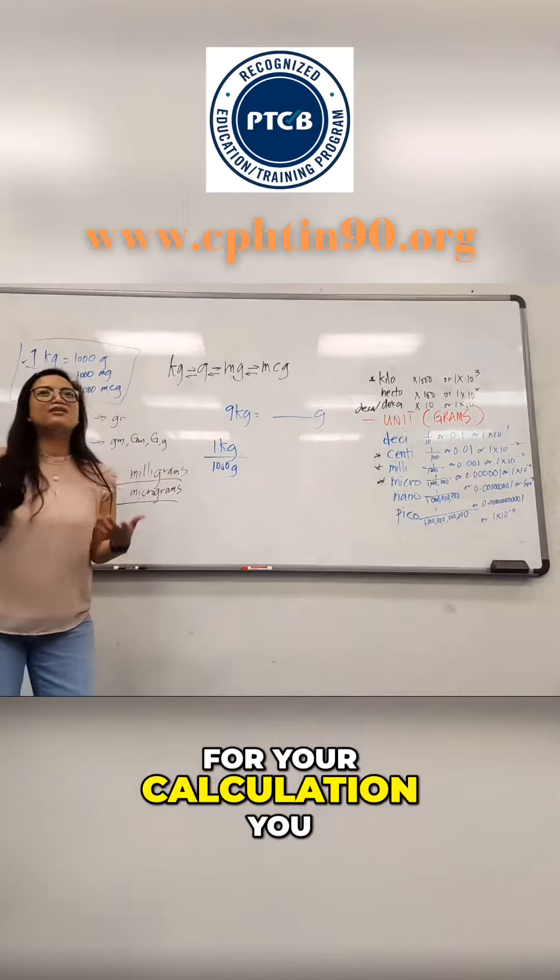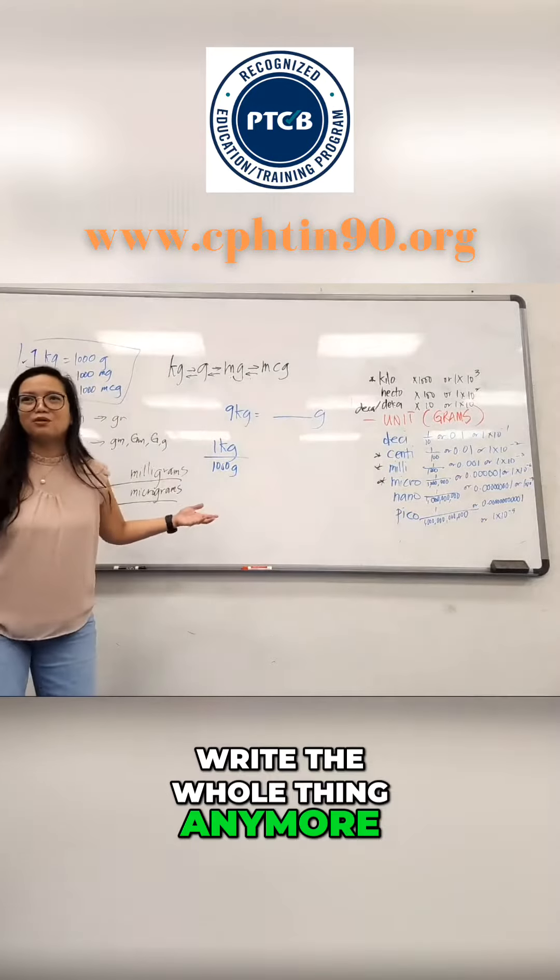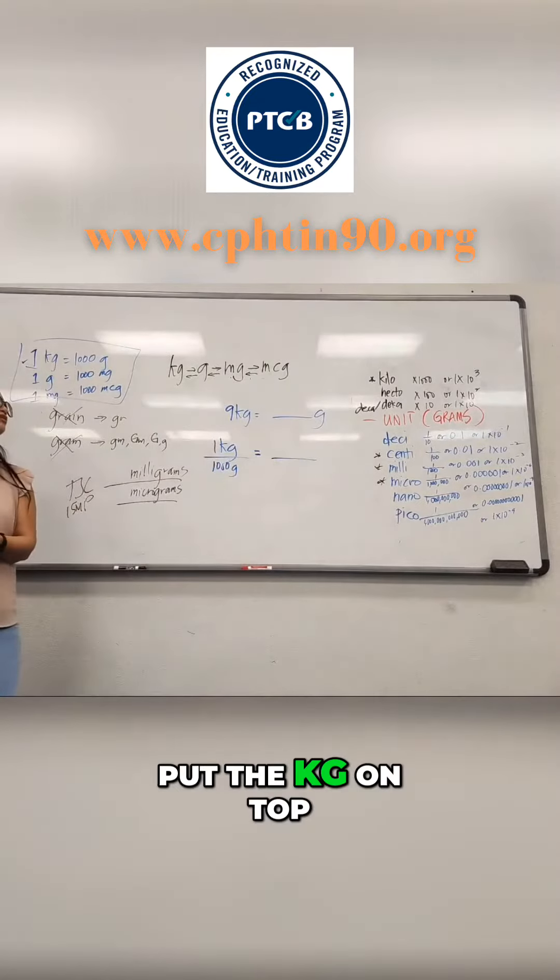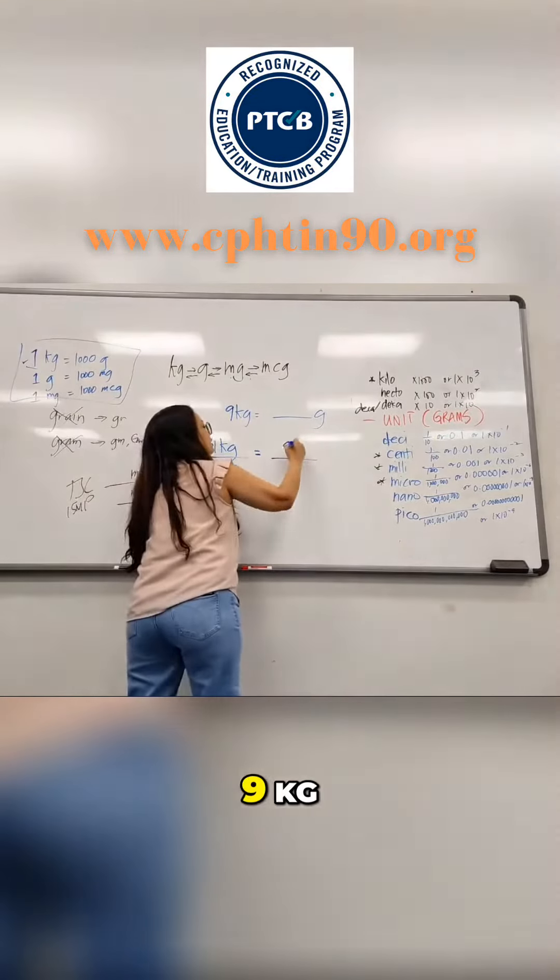Of course, for your calculation you don't want to write the whole thing anymore. Abbreviation is fine. And then, why do you do this? This is proportion where they put the kilograms on top. Nine kilograms because the symbol is there, and this is going to be X grams.